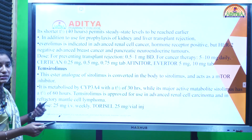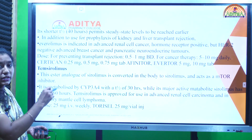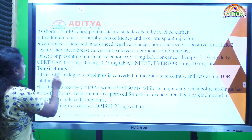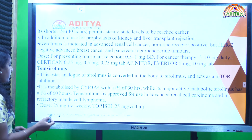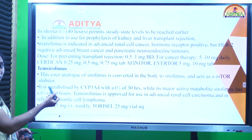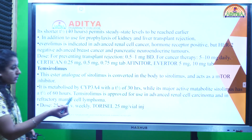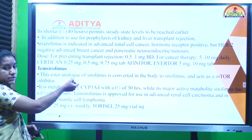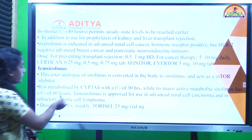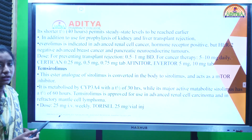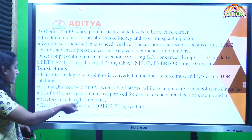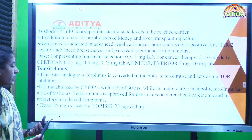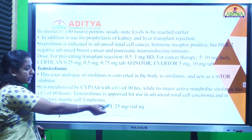Next is temsirolimus, the ester analog of sirolimus. When administered, it is converted into sirolimus in the body. It is metabolized by cytochrome 3A4 with a half-life of 30 hours; the active metabolite sirolimus has a half-life of 60 hours. It is approved for renal cell carcinoma and mantle cell lymphoma. The dose is 25 mg intravenously weekly, sold as Torisel 25 mg per vial injection.